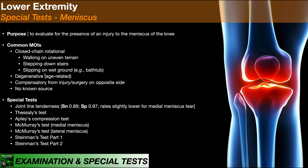Before we get into those, let's talk about typical mechanisms of injury for the meniscus. The most common one is a closed chain rotational mechanism. Oftentimes people get this when they're walking on uneven terrain, stepping downstairs with some excessive rotation, or slipping on wet ground — whether on the sidewalk or getting in and out of a bathtub. Generally, a closed chain rotational mechanism, although this is not the only mechanism of a meniscus injury.